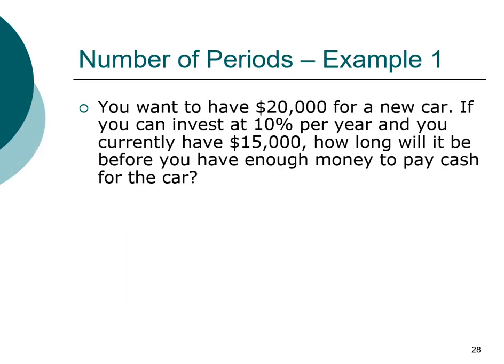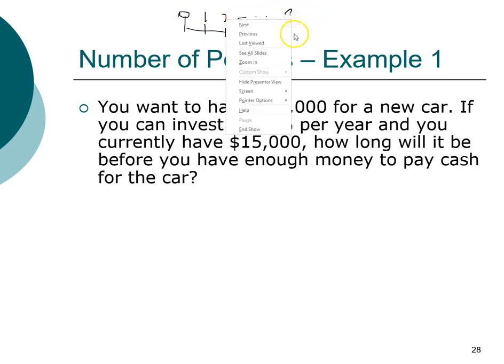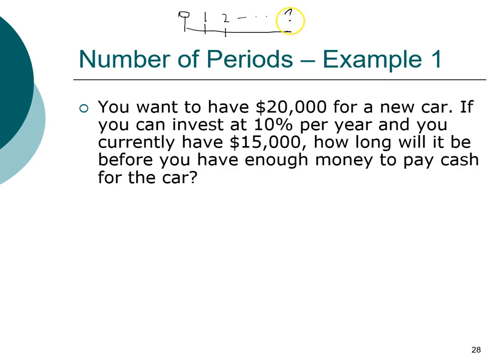Let's say you want to have $20,000 for a new car and you can invest at 10% per year. Right now you have $15,000. The question is, how long do you have to wait? When we draw a timeline, it's a little bit interesting because we don't know how long the investment horizon is. We have an open-ended investment horizon here. That's what we're looking for. We know that we need $20,000 at the end and we're starting with $15,000.